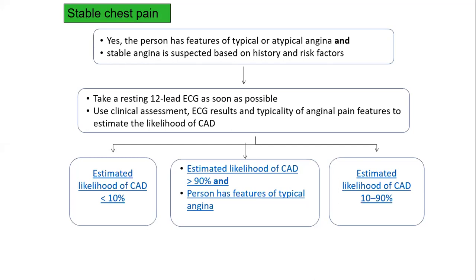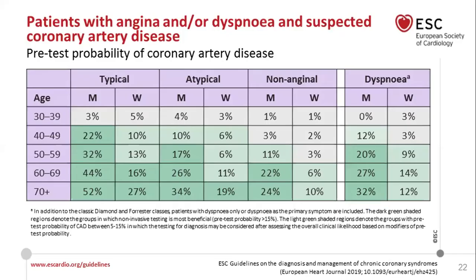In our patient, it was atypical chest pain with suspected stable angina and a normal resting ECG. We use clinical assessment, the ECG, and the typicality of angina to estimate the likelihood of coronary artery disease. There are three classifications: less than 10%, more than 90%, or 10 to 90%. The pre-test probability, based on age, typicality of angina, and sex, can be estimated from an ESC table.